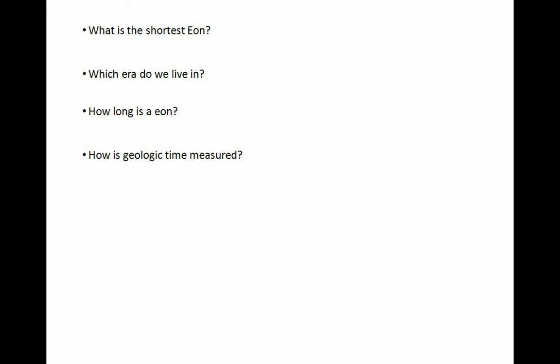How is geologic time measured? The geologic time scale is a calendar for events in Earth's history. It subdivides all time into named units of abstract time called, in descending order of duration: eons, eras, periods, epochs, and ages. The fossil forms that occur in the rocks provide the chief means of establishing a geologic time scale.